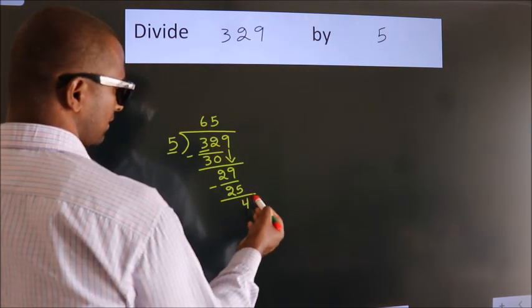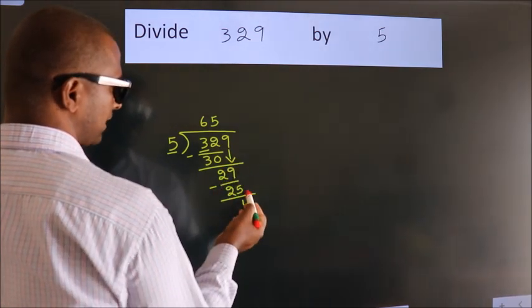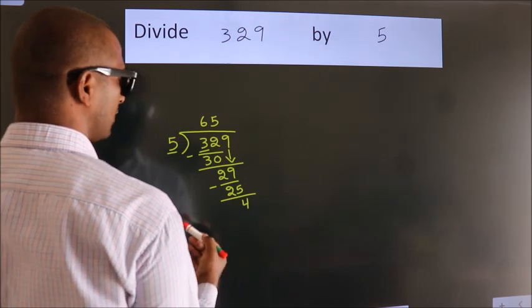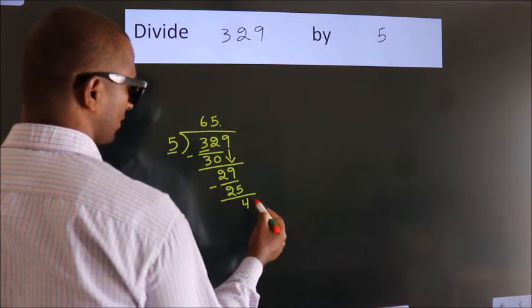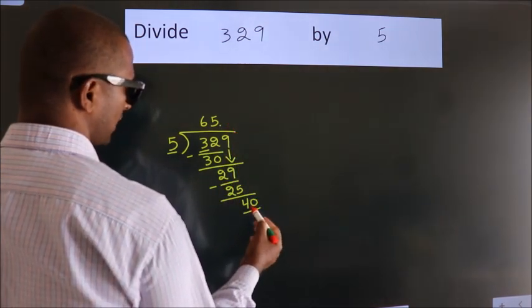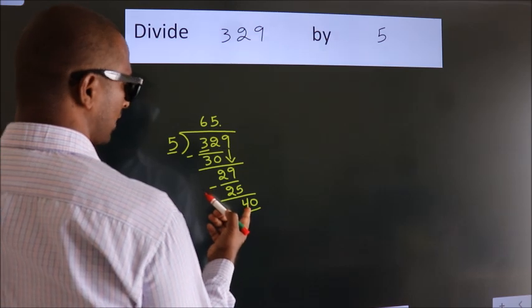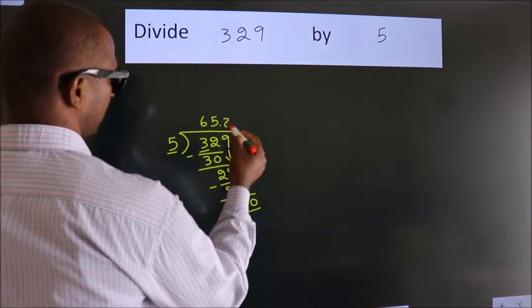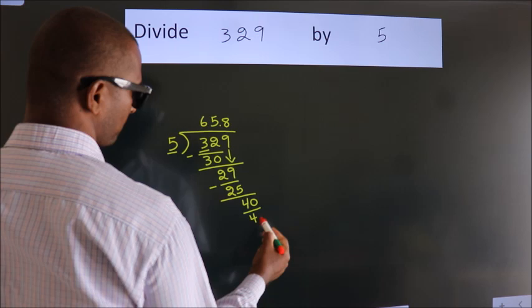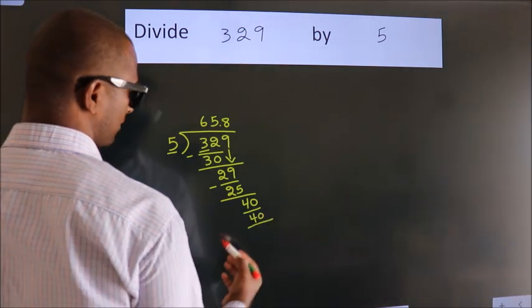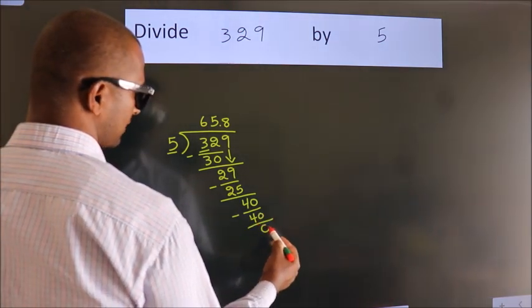After this, no more numbers to bring it down. So what we do is, we put dot, take 0. So 40. When do we get 40 in 5 table? 5 8s, 40. Now we subtract. We get 0.